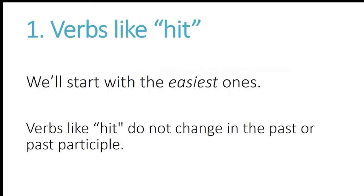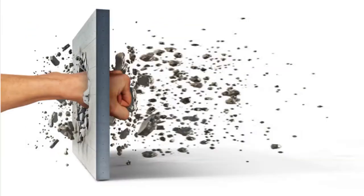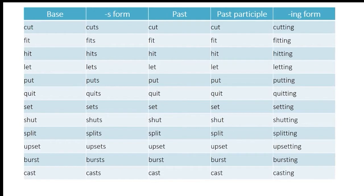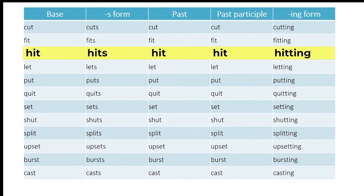We'll start with the easiest ones — verbs like hit. Verbs like hit do not change in the past or the past participle. As you can see here, with hit you have the same form in the base form, the past form, and the past participle form: hit, hit, hit.